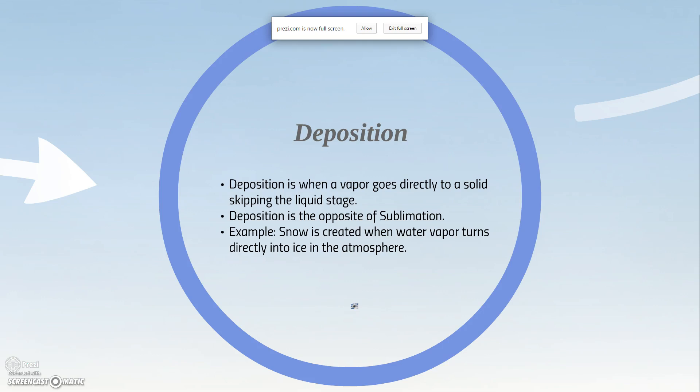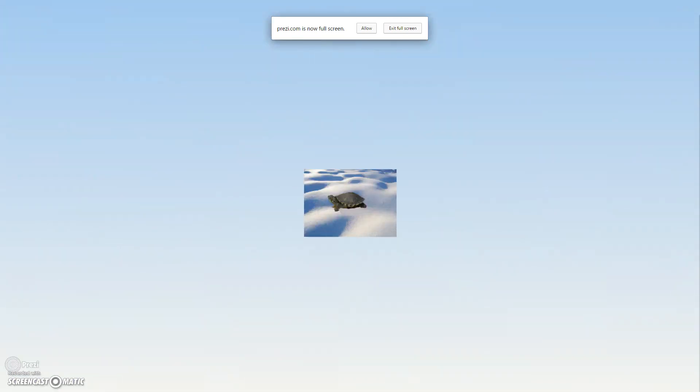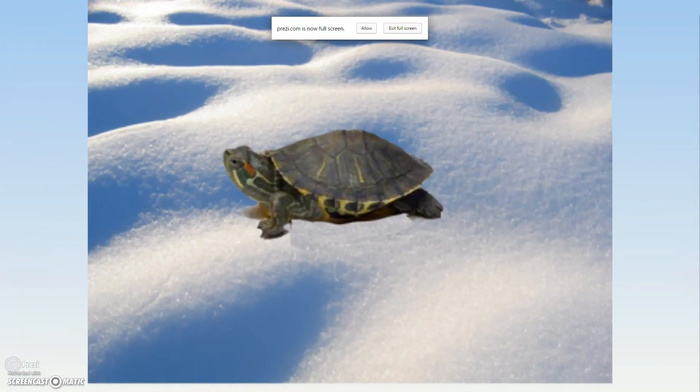Snow is created in the atmosphere when water vapor turns directly into ice. And here's a turtle on top of some snow.